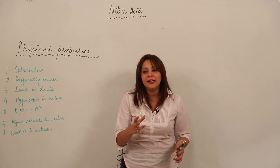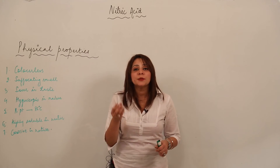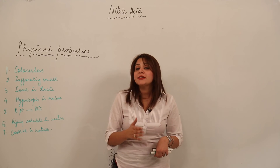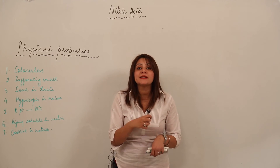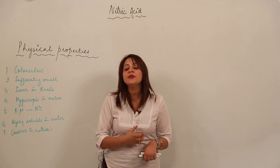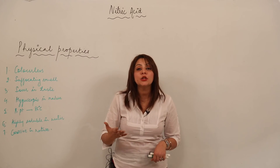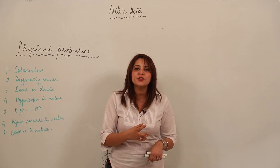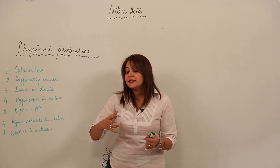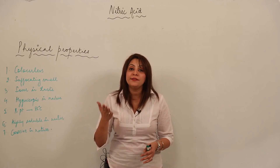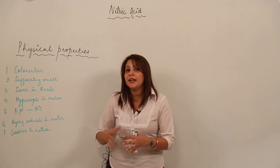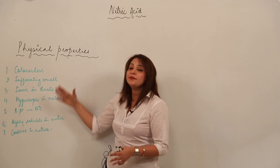Dilute HNO3 is not so corrosive compared to the concentrated form. For example, if dilute HNO3 falls on skin, it turns the skin yellow. The reason is that it combines with the proteins in our skin to form a special type of protein called xanthoprotein, which causes a burning sensation and yellowing of skin. Concentrated HNO3, however, must be handled very carefully because if it falls on skin accidentally, it causes painful skin blisters. So HNO3 is highly corrosive in nature.